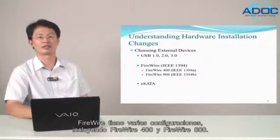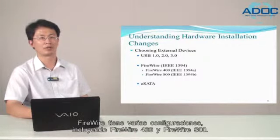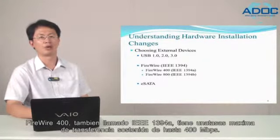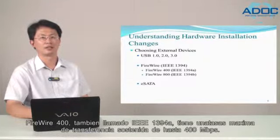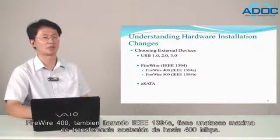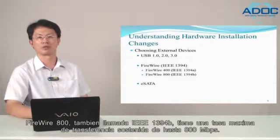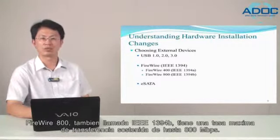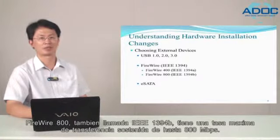FireWire has several configurations, including FireWire 400 and FireWire 800. FireWire 400, also called IEEE 1394A, has maximum data transfer rates of up to 400 Mbps. FireWire 800, also called IEEE 1394B, has maximum data transfer rates of up to 800 Mbps.